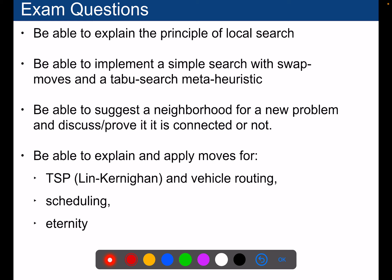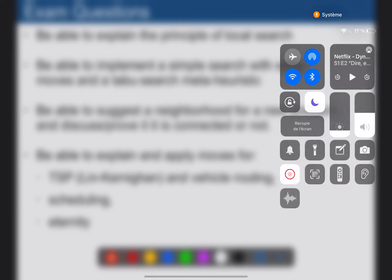So what I expect from you at the exam is be able to explain the principle behind local search, be able to implement a simple search with swap moves and tabu-search meta-heuristic, understand the constraint-based local search framework, be able to suggest a neighborhood for a new problem and discuss if it is connected or not. Be able to explain and apply moves for TSP Lin-Kernighan and vehicle routing, scheduling, and the very large neighborhood search for the eternity problem.